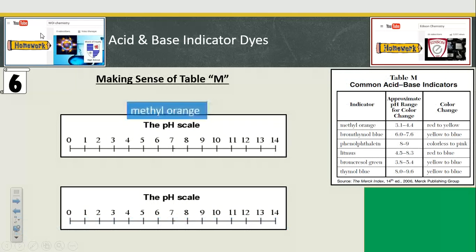Okay? So, making sense of Table M. For methyl orange, anywhere below pH 3.1, we're going to have a red color. That's why there's a red arrow. Any pH above 4.4, we're going to have a yellow color. Simple, right? Let's keep running through our indicators and see how it looks.